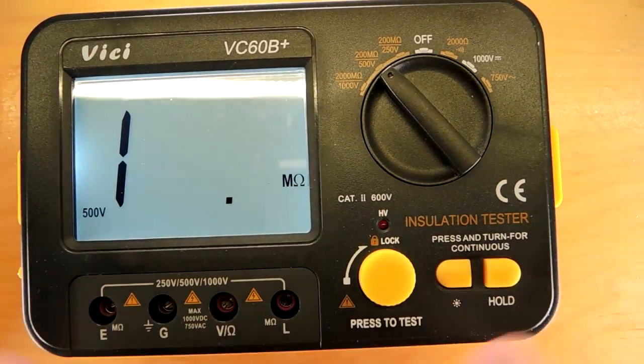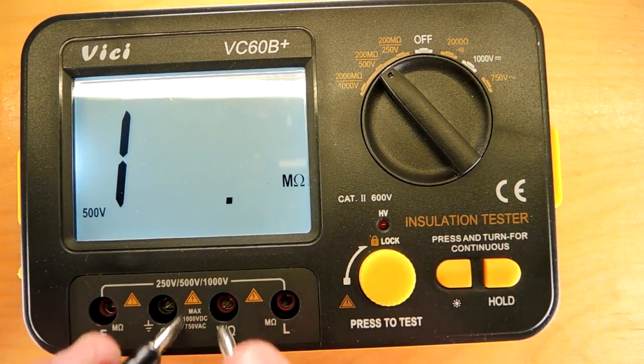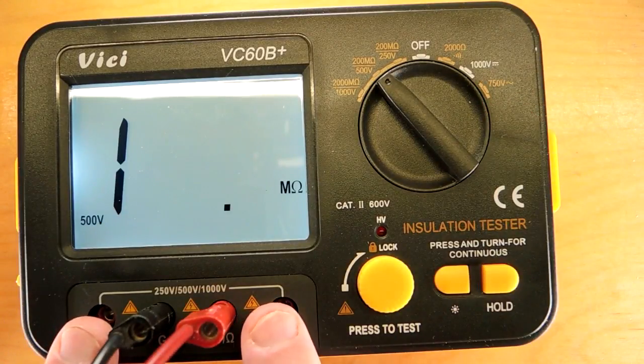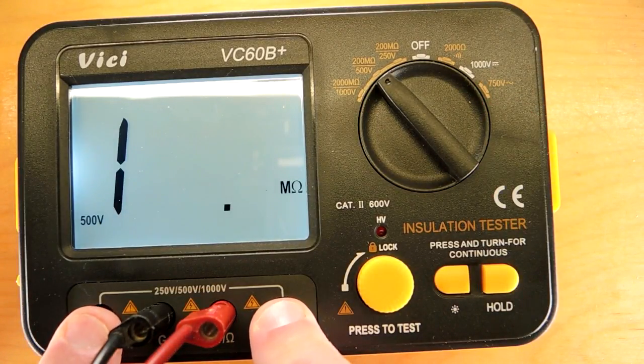Coming down into the meter, the reason for four jacks, there's two jacks in the middle here for the traditional ohm meter functions, and these are here for the mega-ohm side.